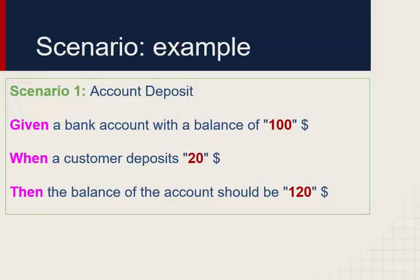Here is a scenario example — Account Deposit. Given a bank account with the balance of $100, the parameter is passed in double quotes. When a customer deposits $20. Then the balance of the account should be $120 — already $100, now depositing $20, so the total is $120.